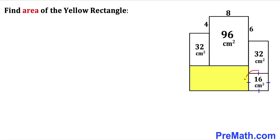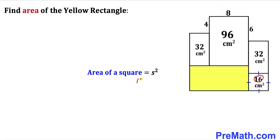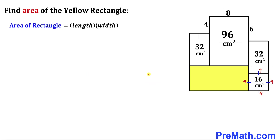Let's focus on this square and recall the area of square formula: area equals s squared, where s represents the side length. In our case the area is 16, so 16 can be written as 4 squared. That means the side lengths for this square are going to be 4 across the board.